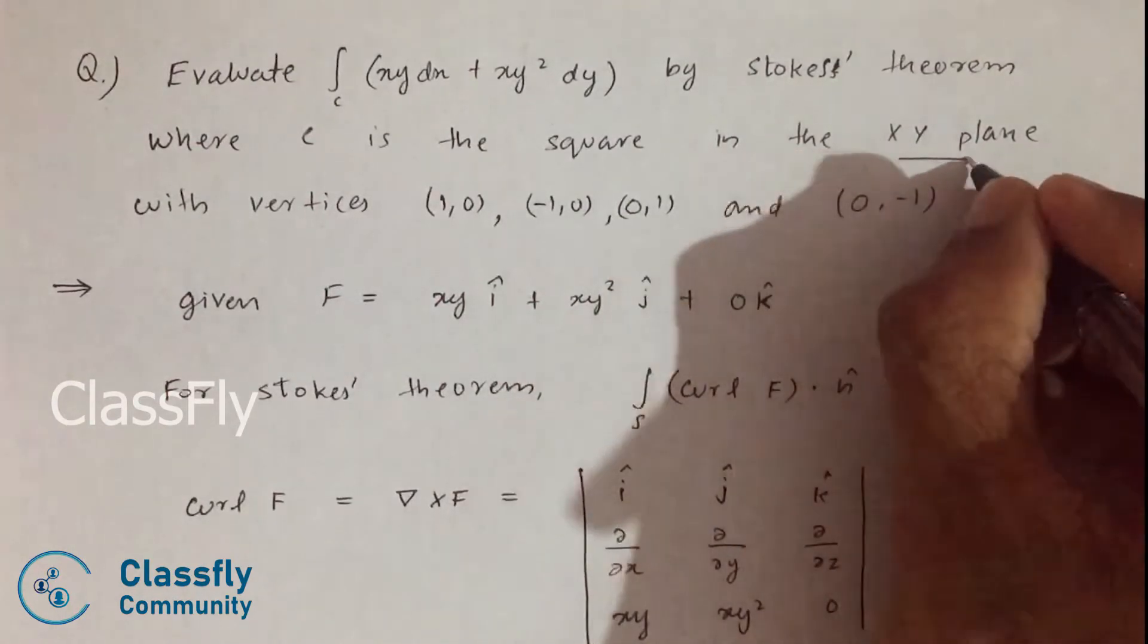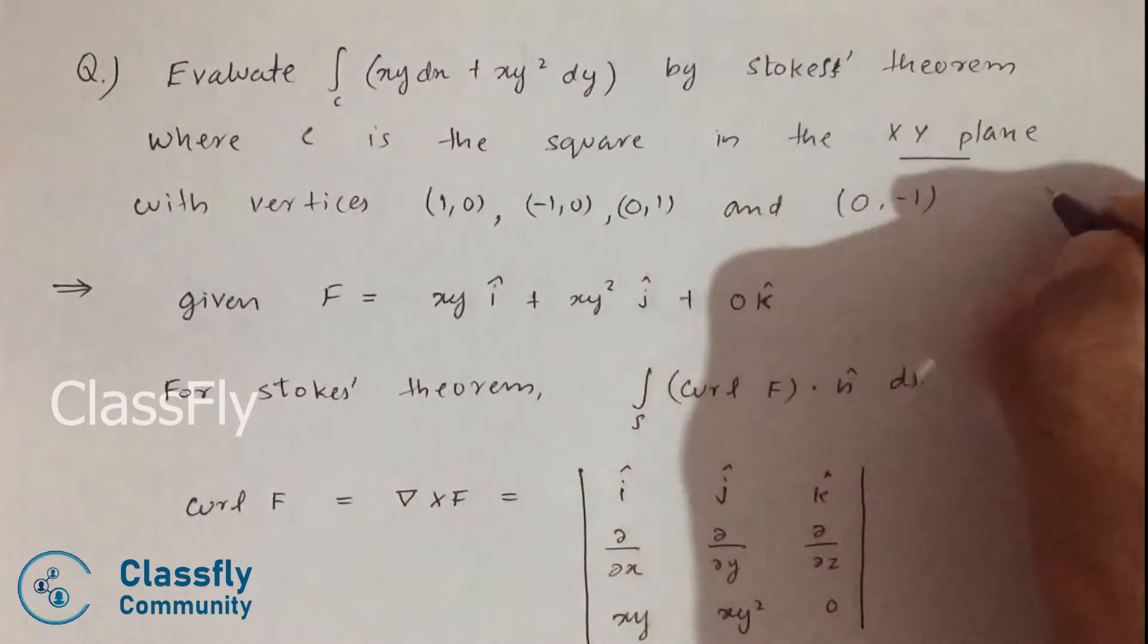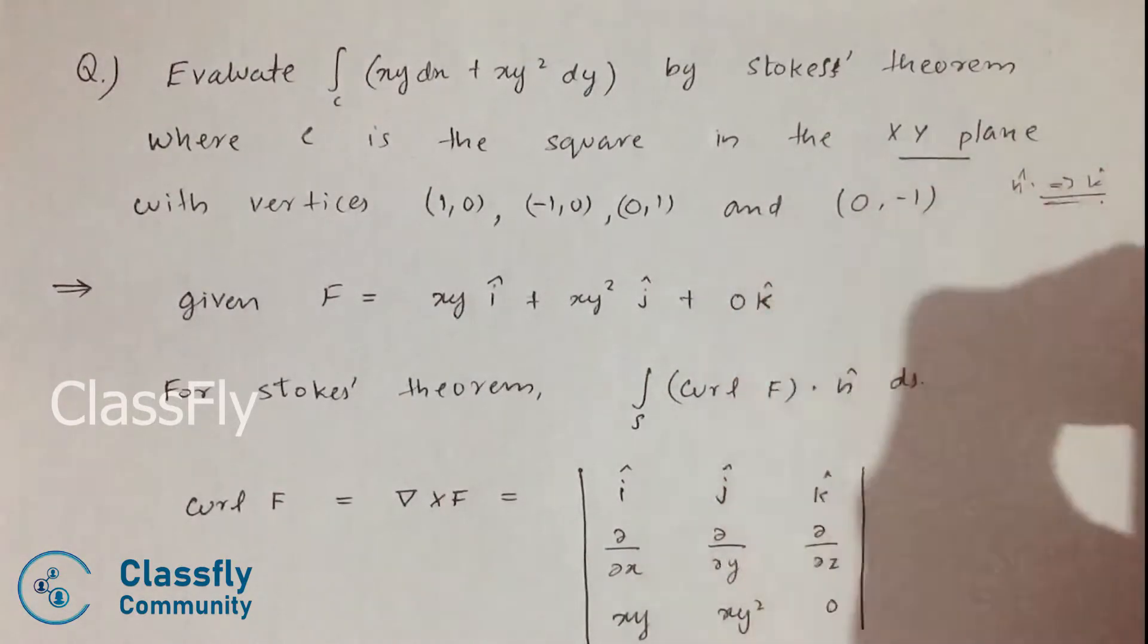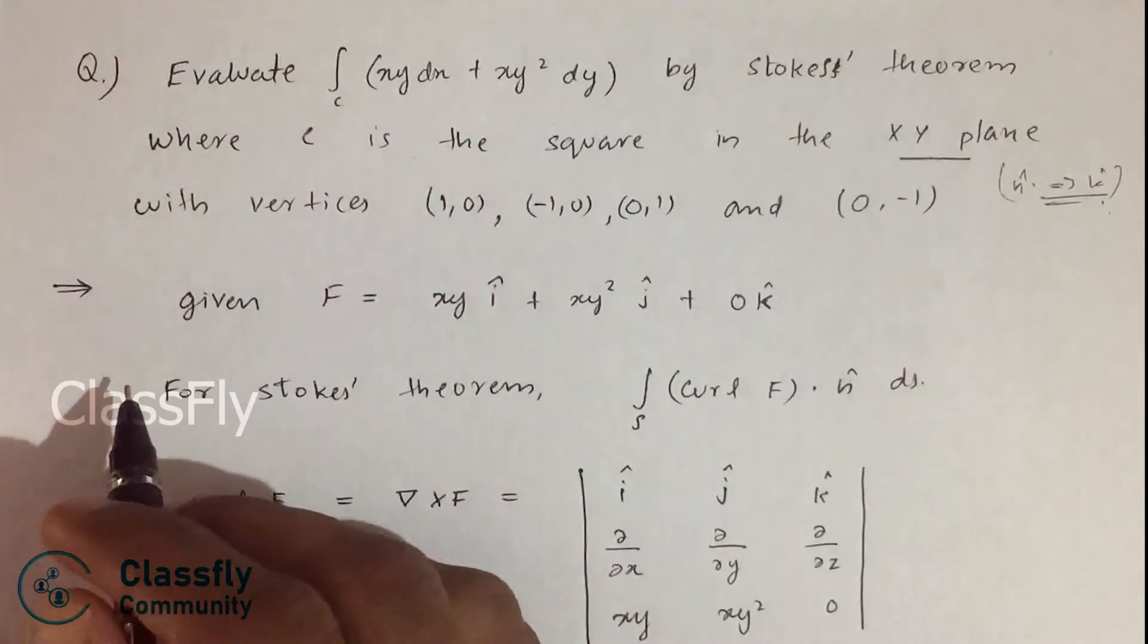From here itself we can understand that the normal vector is equal to k cap. Okay, so let us continue our solution.